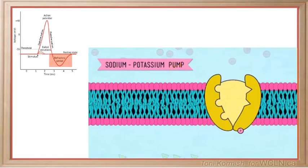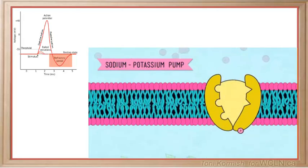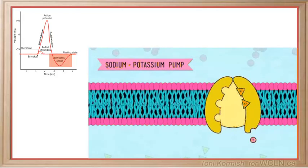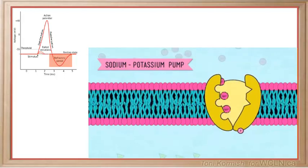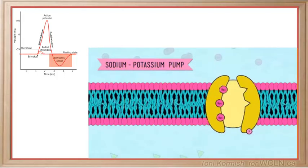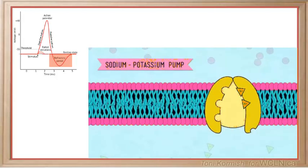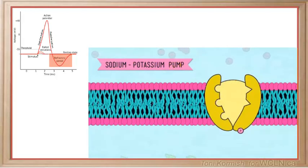Before the neuron can fire again, the ions have to be moved back to their original locations. This period is referred to as the refractory or recovery period. During the recovery period, the sodium-potassium pump actively moves sodium ions back outside and potassium ions back into the neuron.